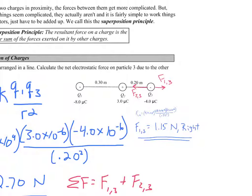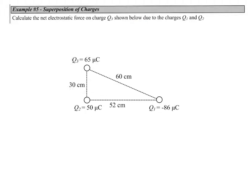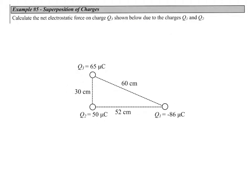Let's go ahead and take a look at the next example. In this example, we want to calculate the net force on Q3 due to charges Q1 and Q2. The difference here is that we are now looking at two dimensions, which will change our free body diagram a little bit.